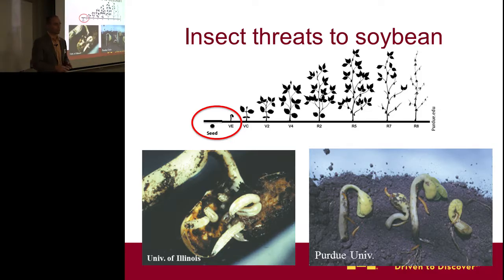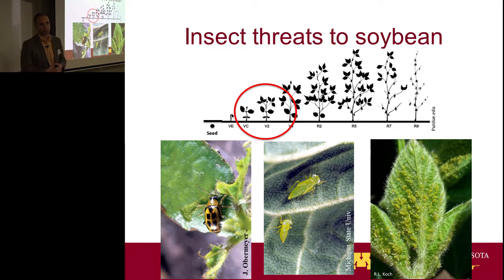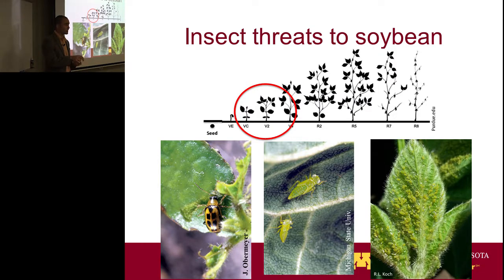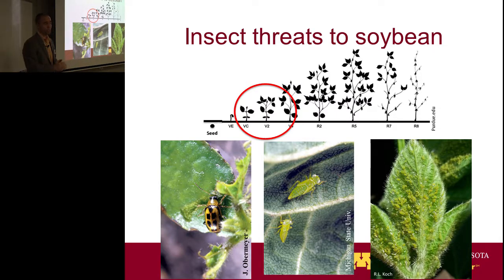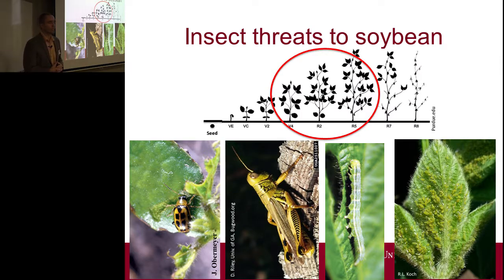The seed can be attacked by things like seed corn maggot and wireworms. As the plants begin to grow, the early vegetative stages can be attacked by bean leaf beetles that feed on the leaves, potato leafhoppers, which are piercing, sucking, sap-sucking insects. In that picture on the far right is a leaf infested with soybean aphids, which also make their living by sap-sucking — piercing the plants kind of like a mosquito pierces our skin. Then in later growth stages, you get bean leaf beetles, grasshoppers, various caterpillars, and soybean aphids are still an issue.